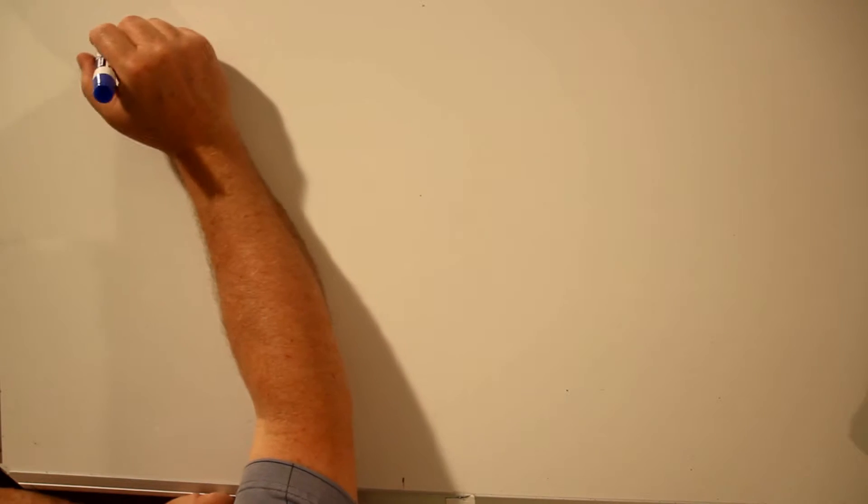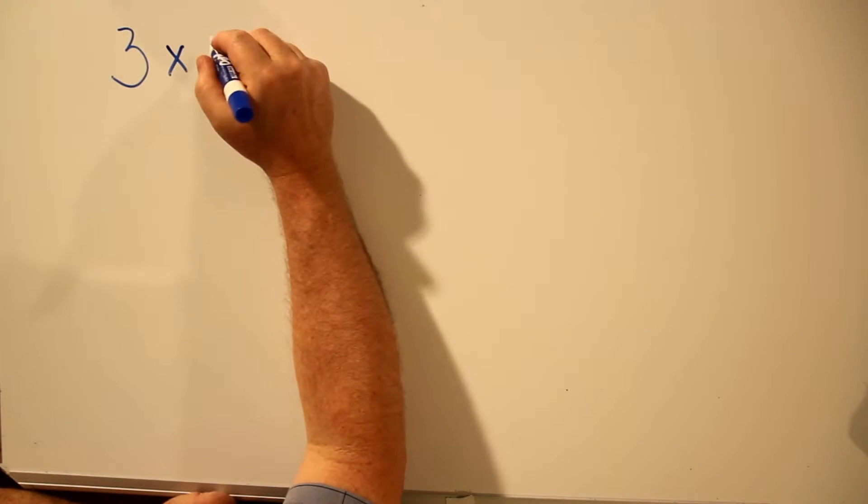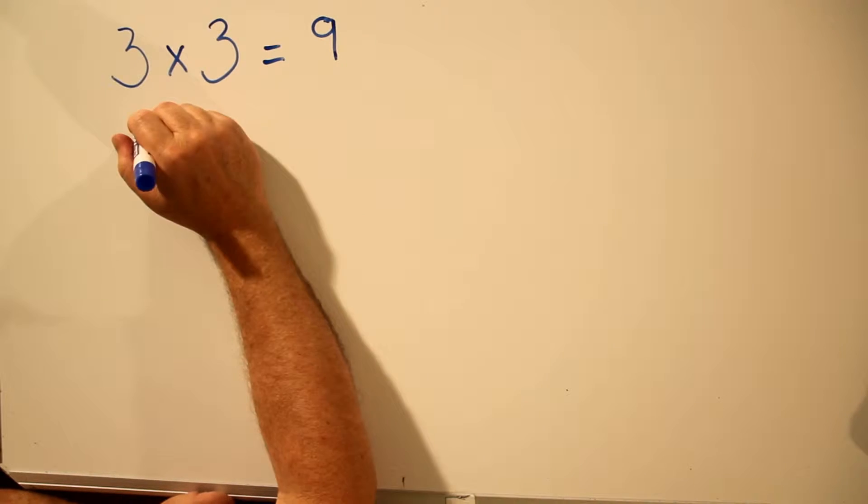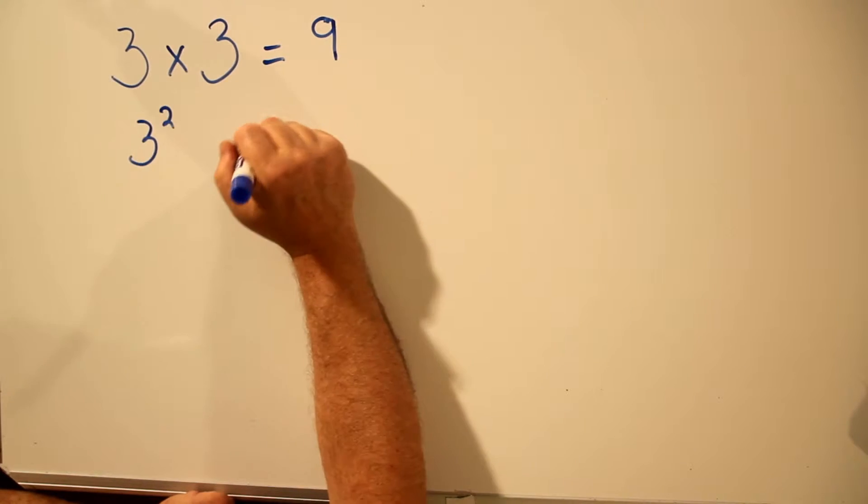In order to explain square roots, I'm going to look at multiplying two numbers together. 3 times 3 is 9, and we say 3 squared equals 9.